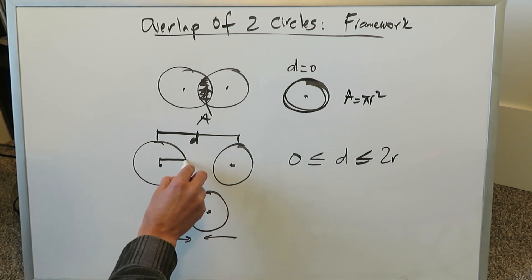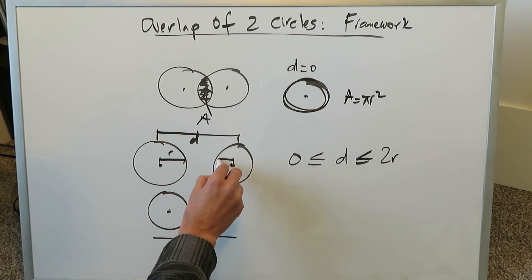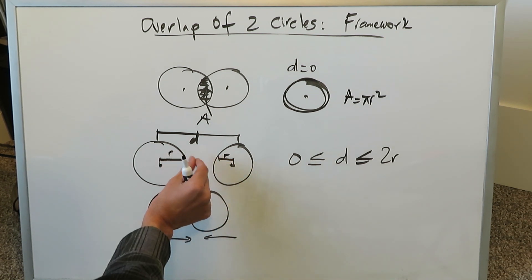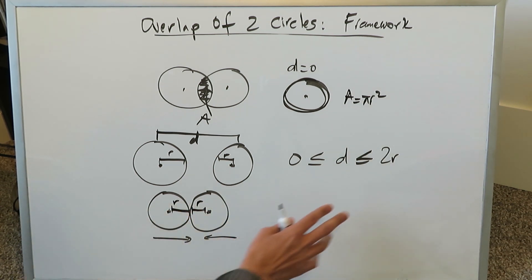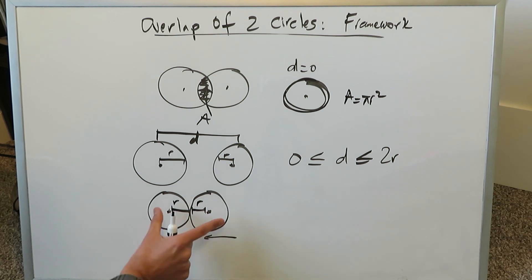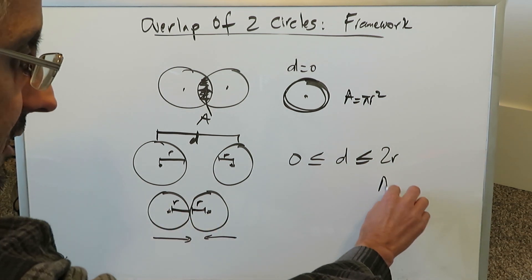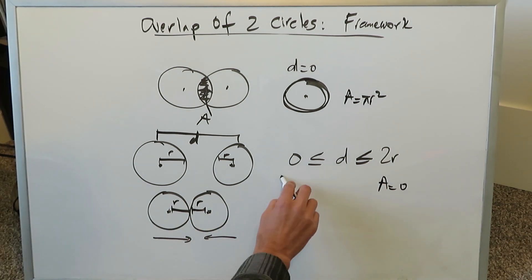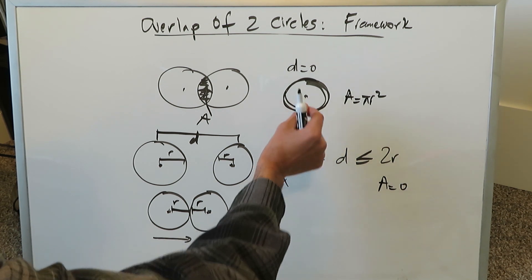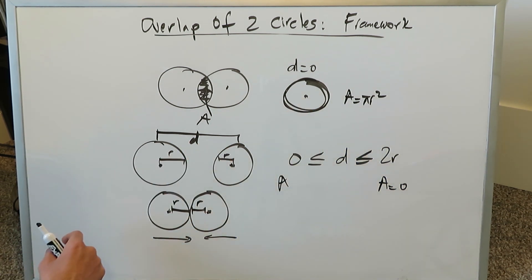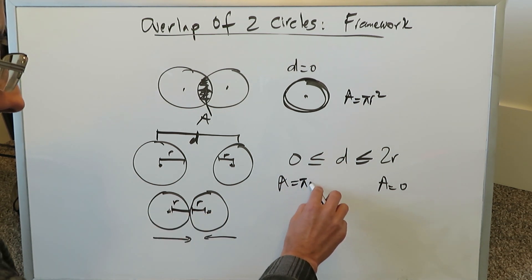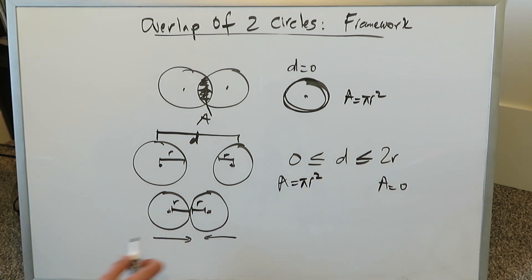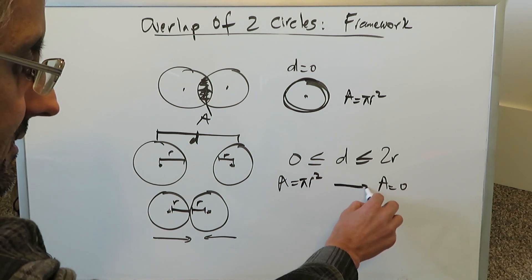What does less than or equal to two r mean? It means exactly what you might be thinking. From one center to the circle edge is a radius, and from the other center to its edge is a radius. If you add these together you have two radii connected in a straight line. At that point there's no overlap so the area of overlap equals zero. When the circles are coincident — centers on the same point — the overlap is complete, one hundred percent, and the area equals pi r squared.